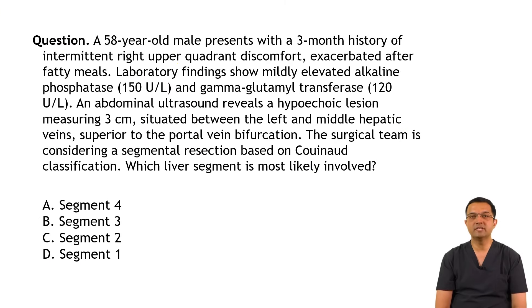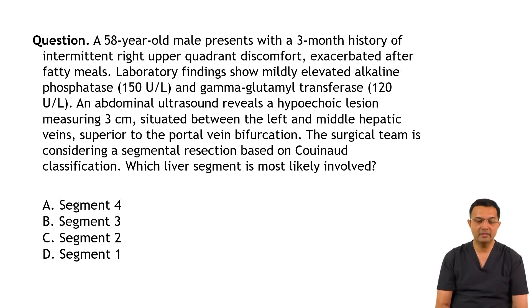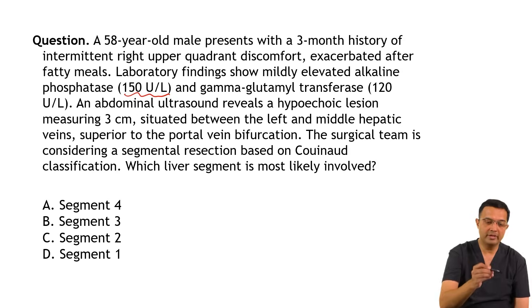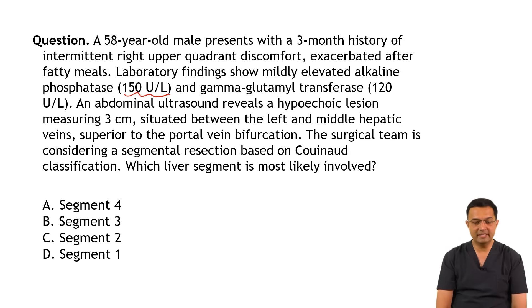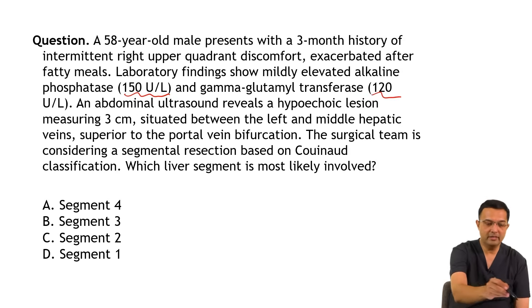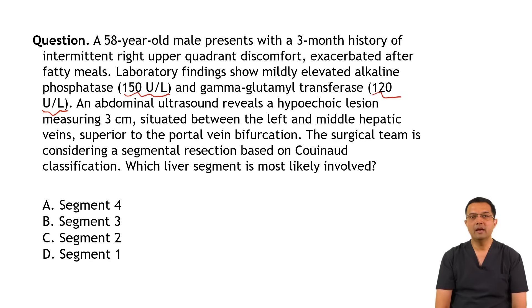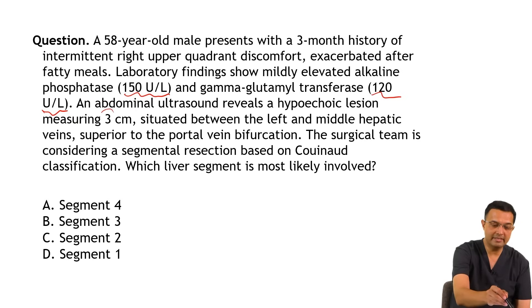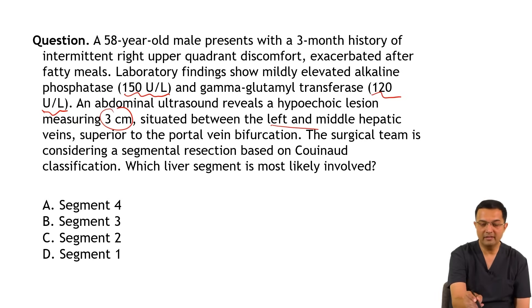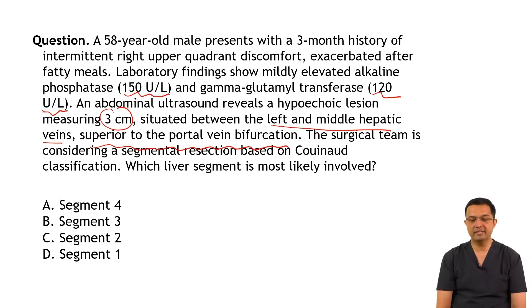A 58-year-old male presents with a 3-month history of intermittent right upper abdominal discomfort. Laboratory findings show mildly elevated alkaline phosphatase level of 150 units per litre and GGT of 120 units per litre. An abdominal ultrasound reveals a hypoechoic lesion measuring 3 cm situated between the left and middle hepatic veins, superior to the portal vein bifurcation.